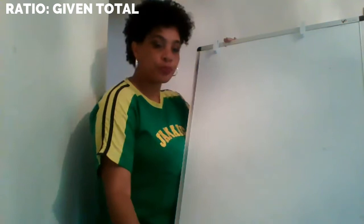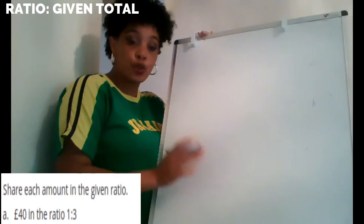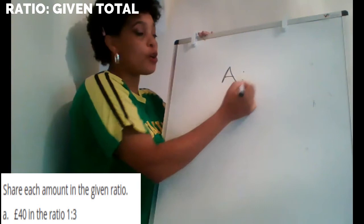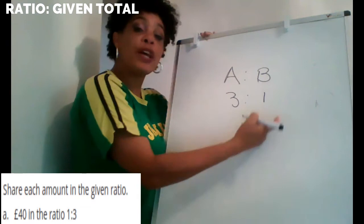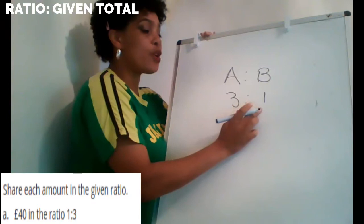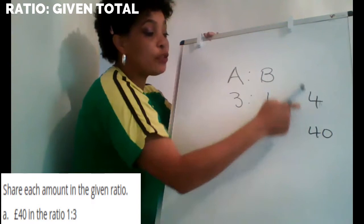The question says: share 40 pounds in the ratio of three to one. I'm going to call the first part A and the second part B since we were not told who they are for. So three to one — that means I'm sharing all of that 40 pounds into four parts. Three plus one is four, so I put the 40 under the four.